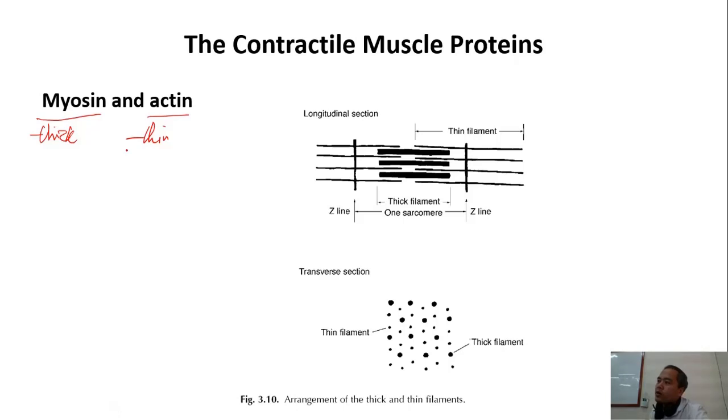These are the two proteins responsible for muscle contraction. You are stronger than other people mainly because of your muscle, and the proteins which are responsible are myosin and actin. They are called myofibrillar proteins.